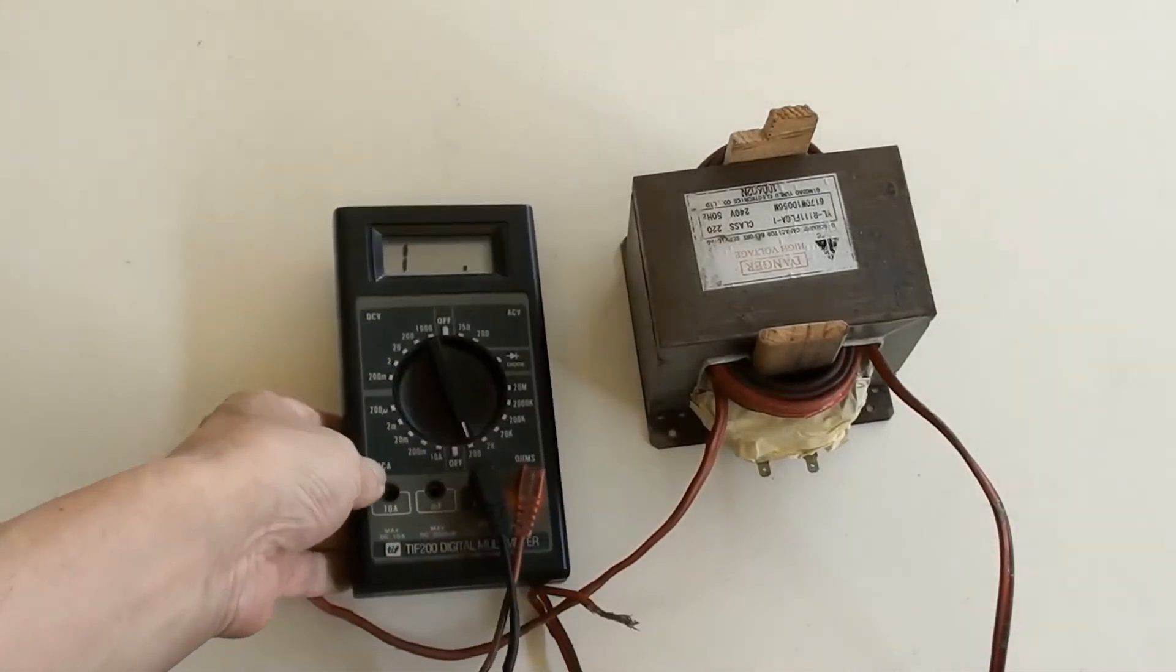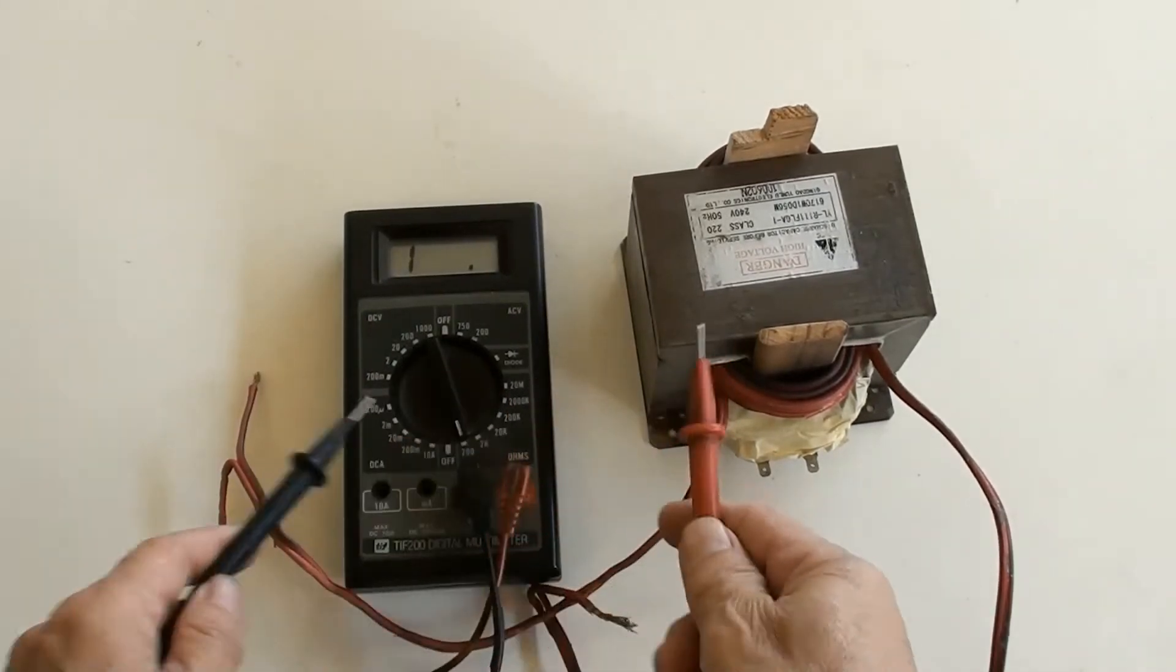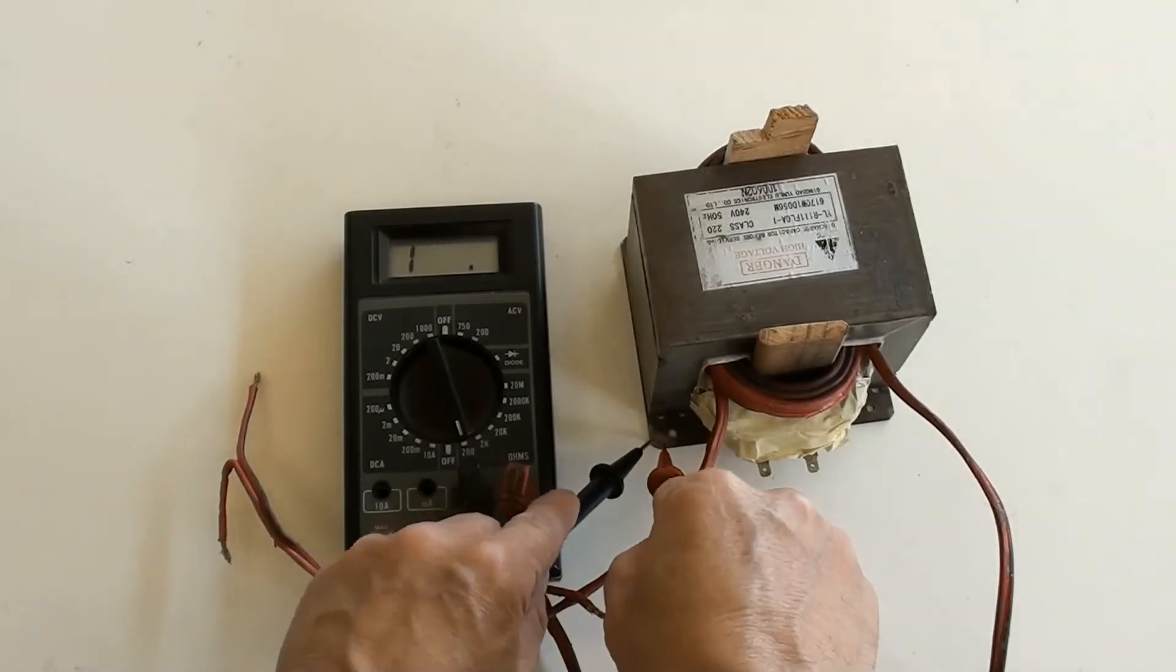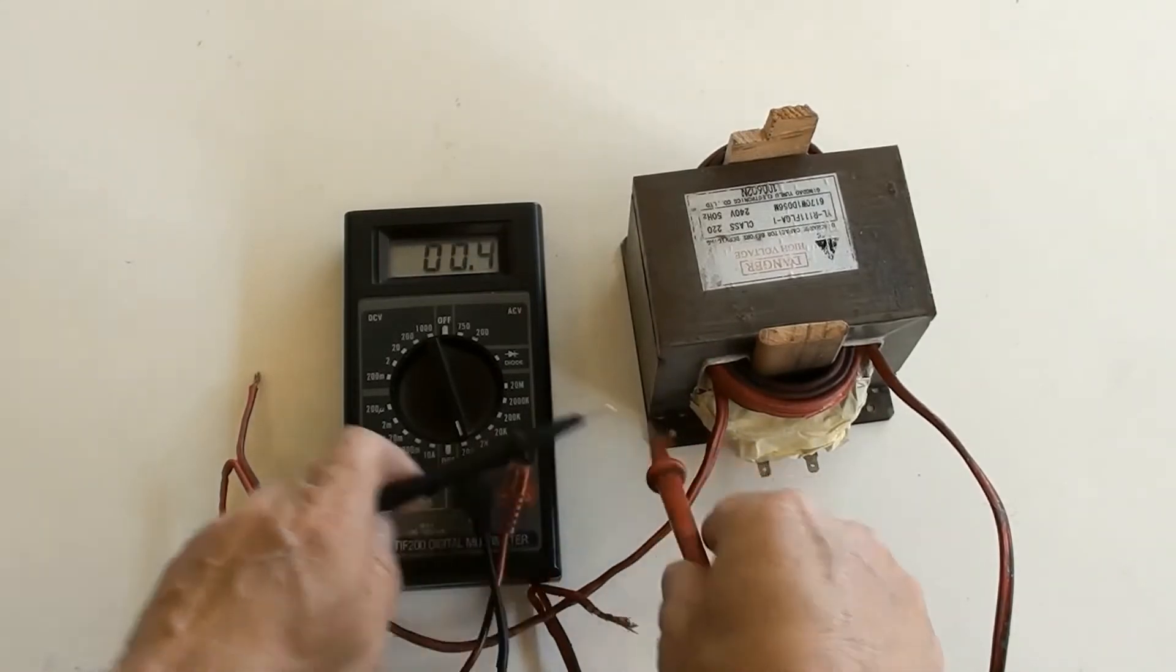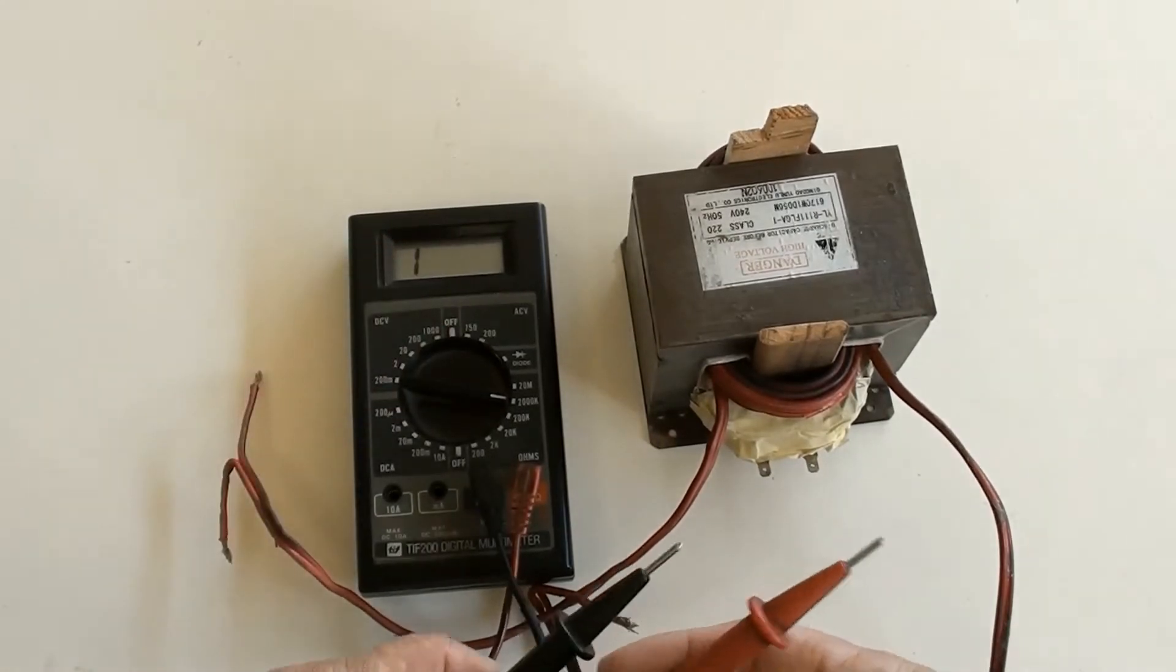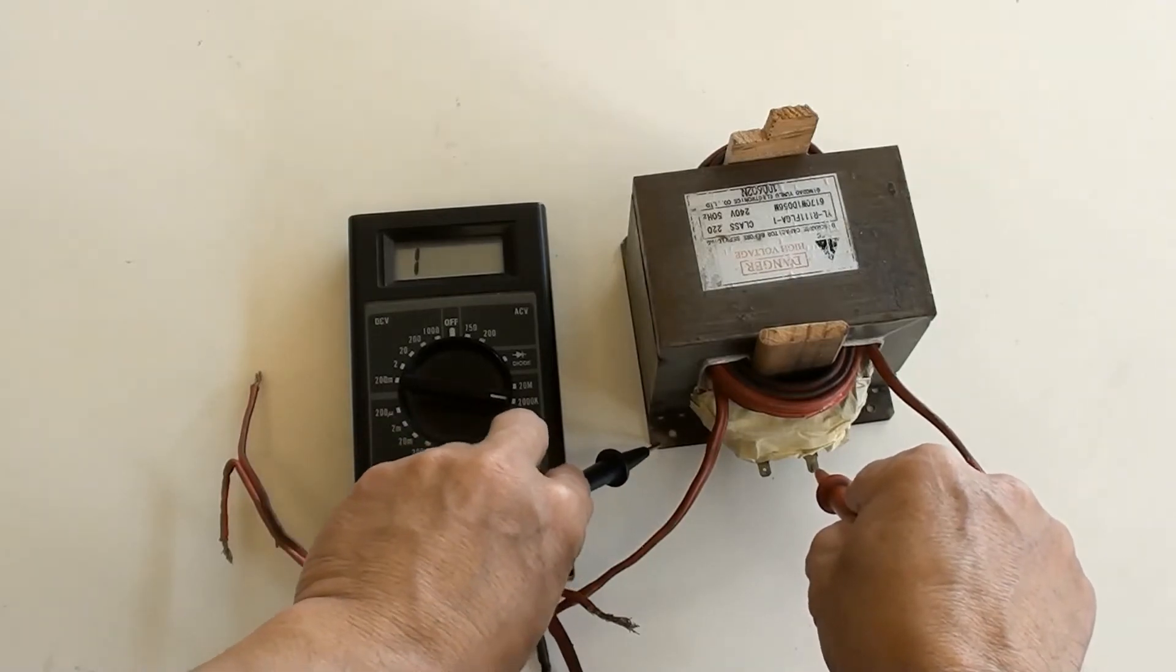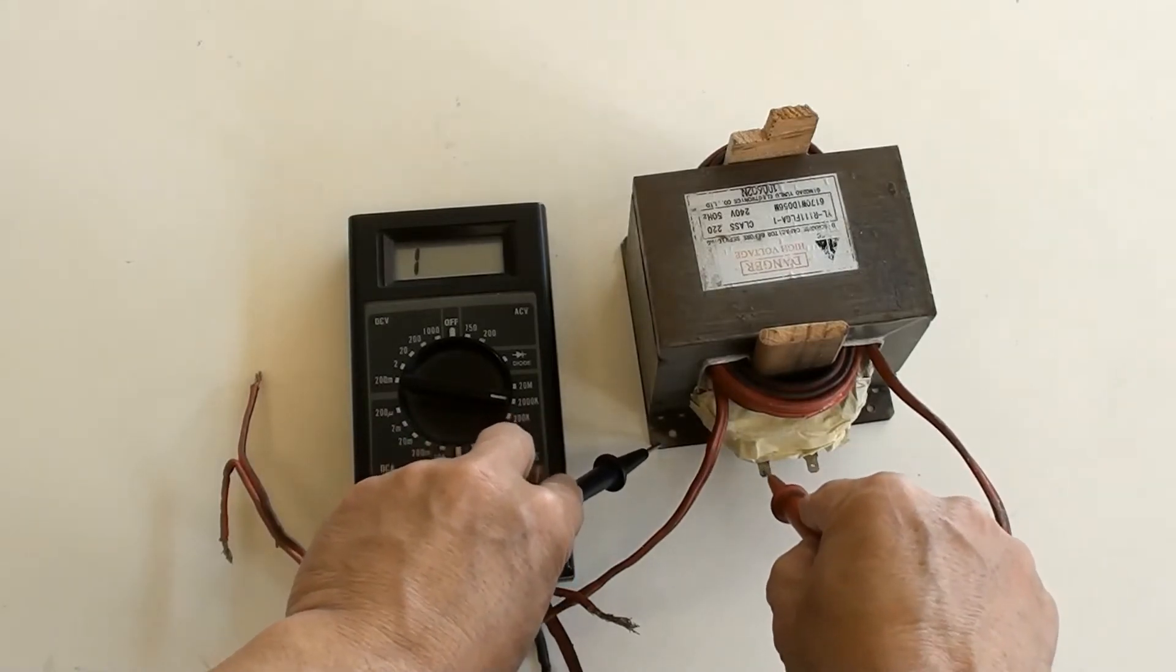Now is to test coil insulation. That is the bare area of transformer's base which should show conductive by multimeter's ohm function. Yes, as shown. Selected 2000k ohms position, then testing between primary terminals and base. No conductive, that's good.